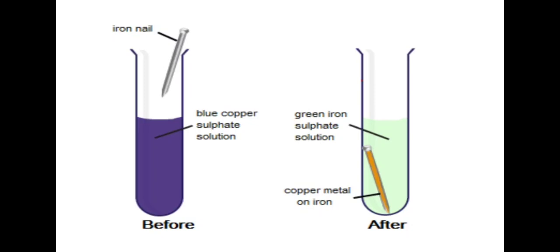How does this happen? These changes are due to the chemical reaction which takes place between the copper sulfate solution and the iron nail. When they both combine, they produce two new substances.